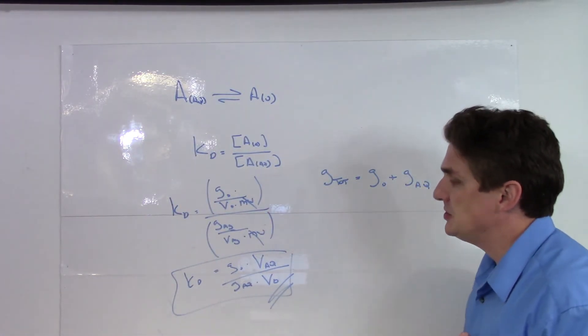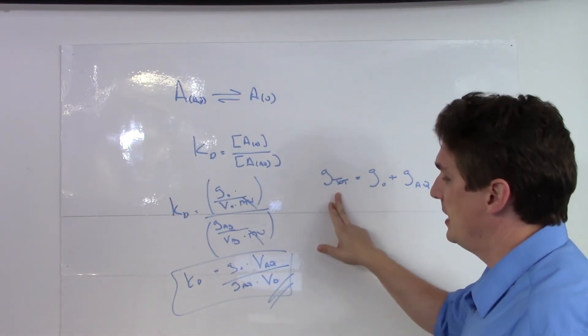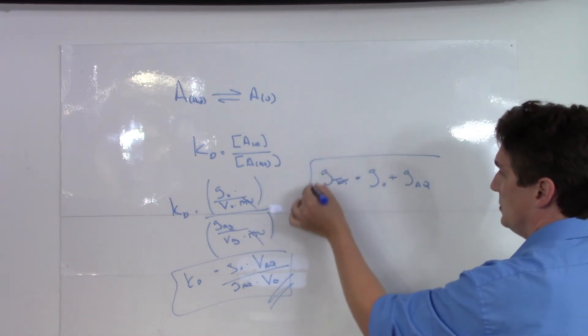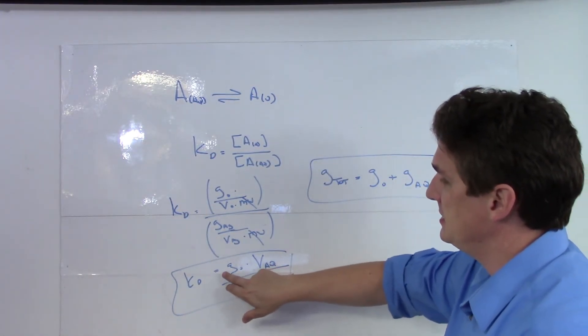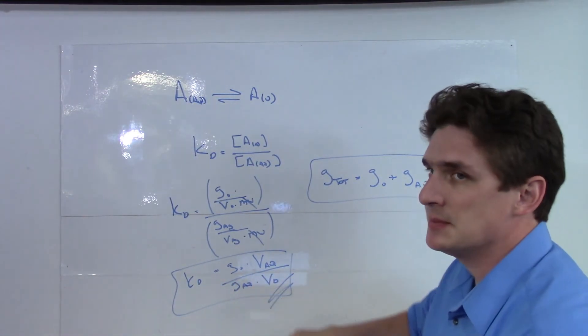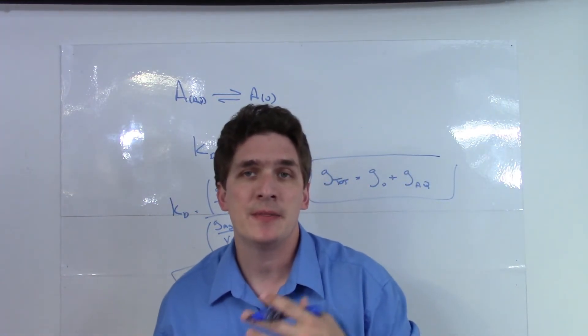So using this relationship, we can figure out basically how the weights are distributed between the two phases. So if we know how much we put in total, this is one expression, one equation.